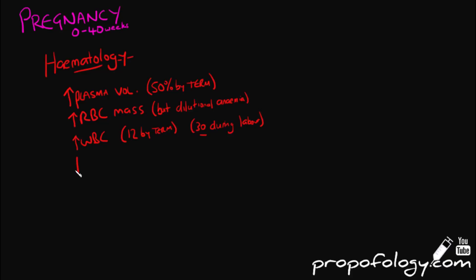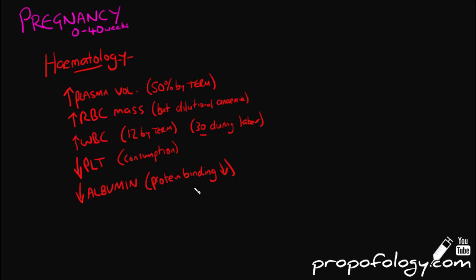The levels of white blood cells increase during pregnancy and particularly during labour — usually at a level of 12 by term, with a further increase to 30 during labour. You will see a decreased platelet level due to consumption in the body. Albumin also decreases, which increases the free active proportion of plasma-bound drugs in the body — very important when considering what drugs you're giving somebody.